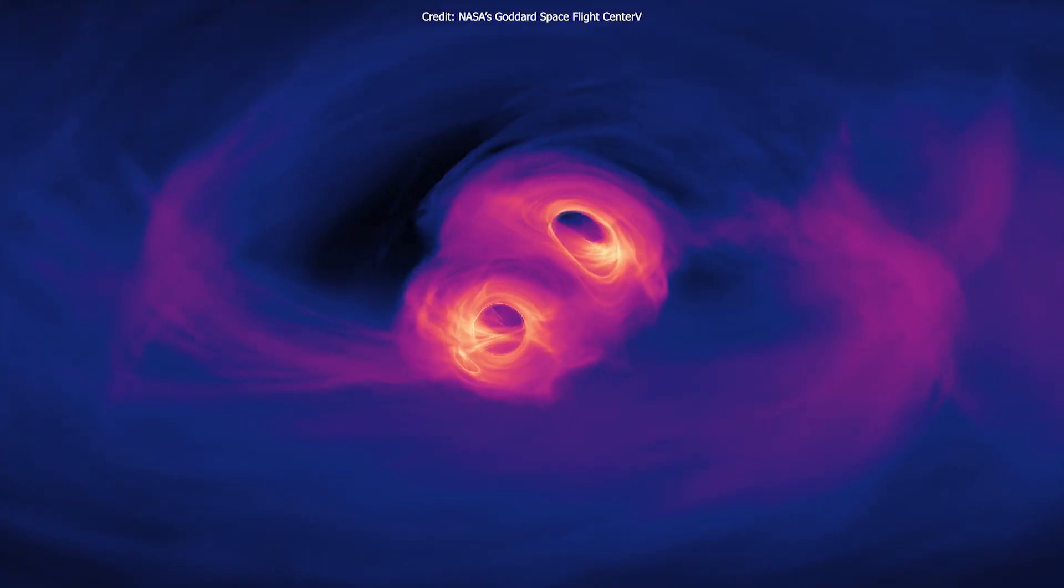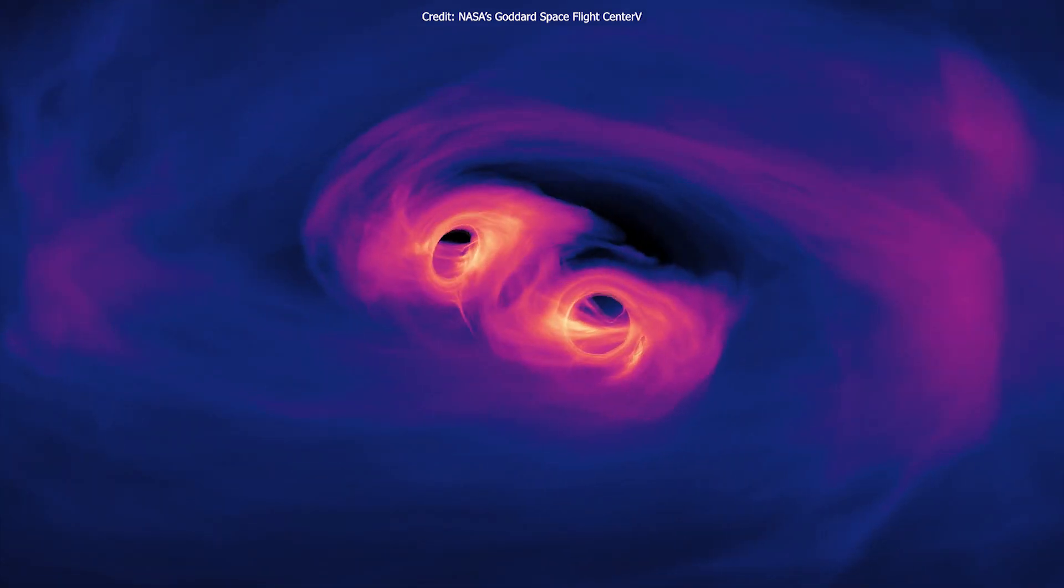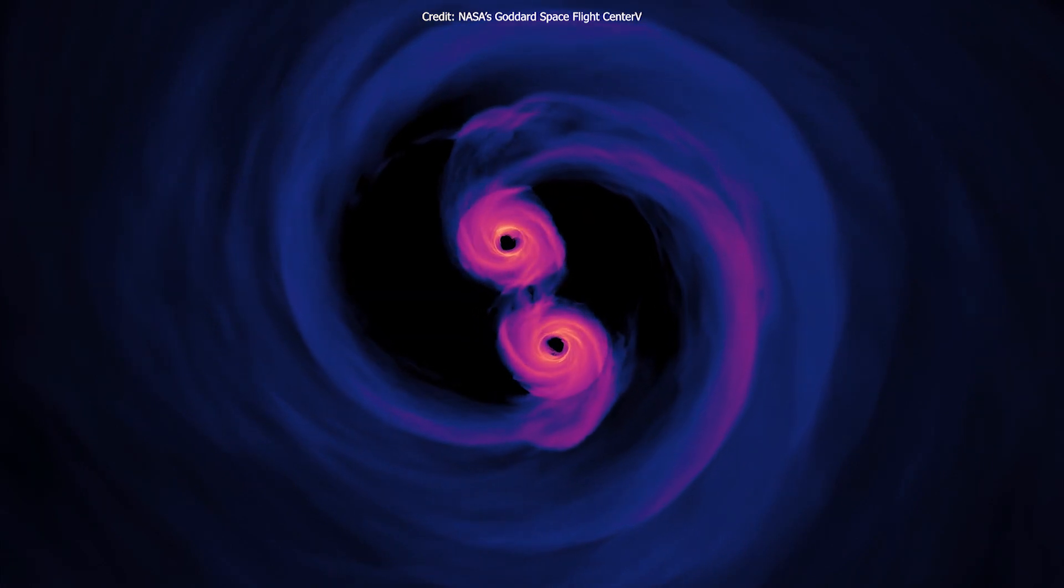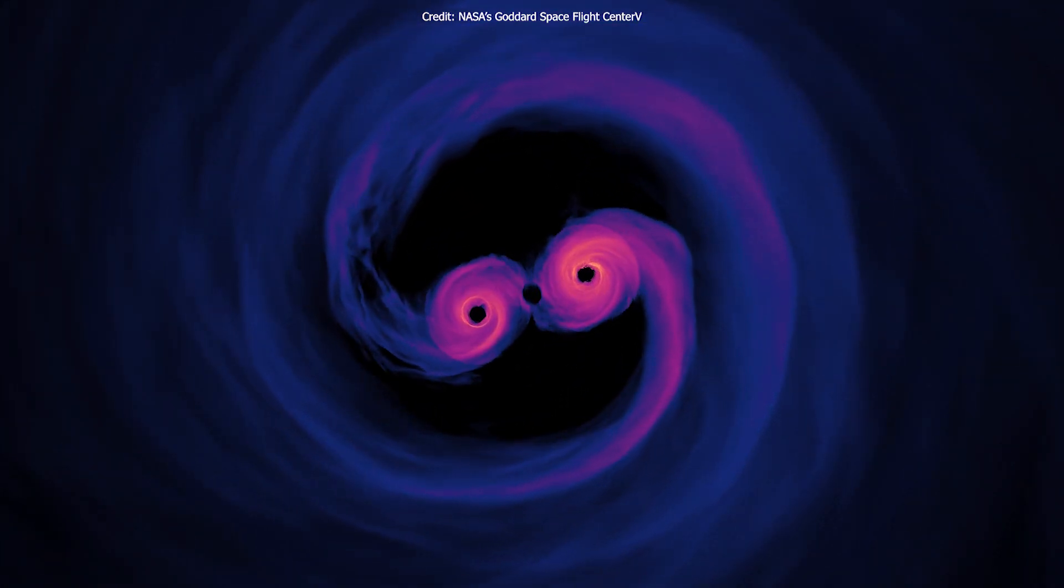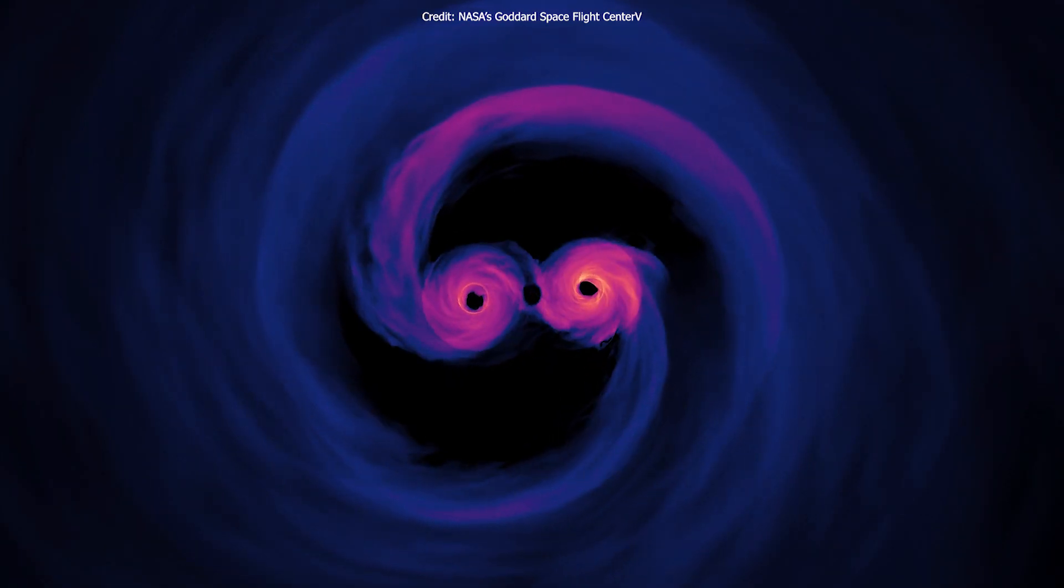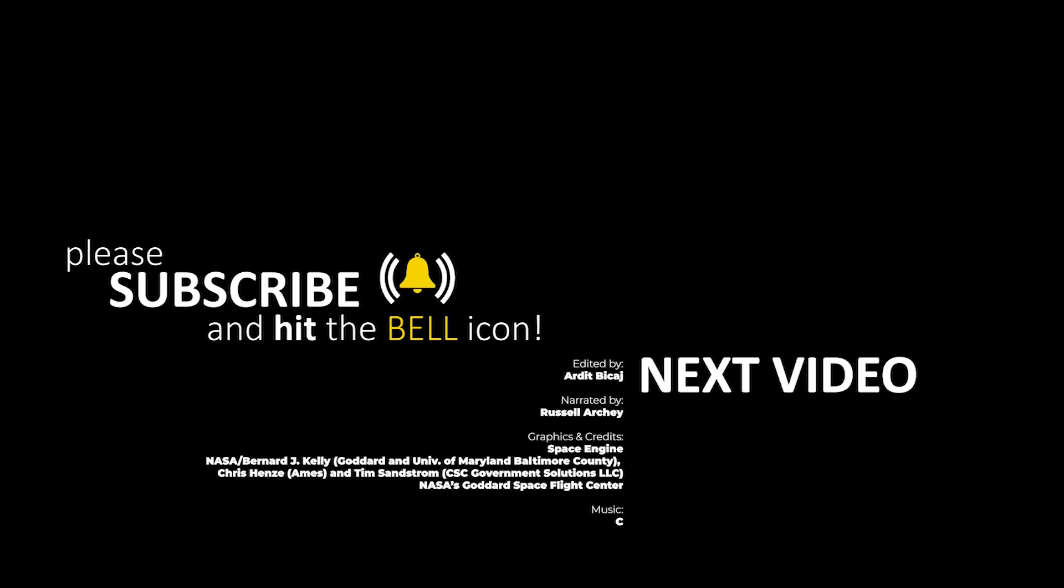The event confirms that the merger of two small black holes can produce an intermediate black hole. The bottom line is that we've just witnessed the heaviest black hole merger ever directly seen, and that led to the first definitive detection of an intermediate mass black hole.